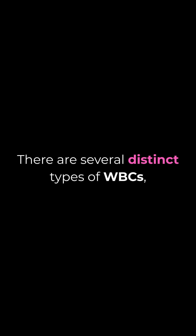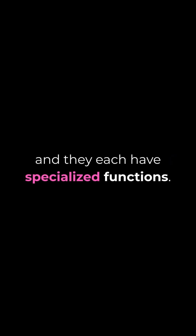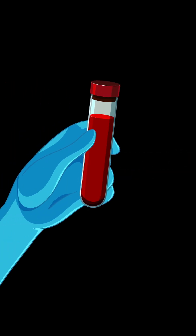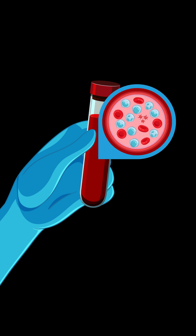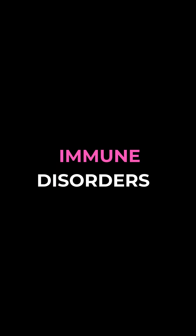There are several distinct types of WBCs, and they each have specialized functions. In a blood sample, the relative proportions of these types of WBCs provide important diagnostic information. Abnormal counts or imbalances can indicate a range of medical conditions, including infections, immune disorders, and blood cancers like leukemia. For this reason, WBC classification is important.